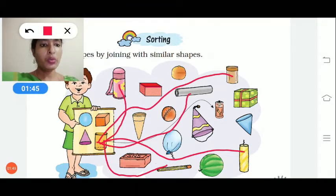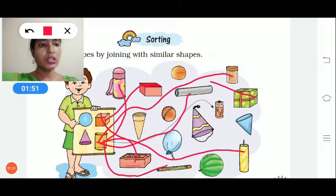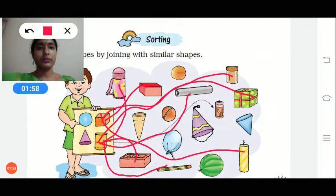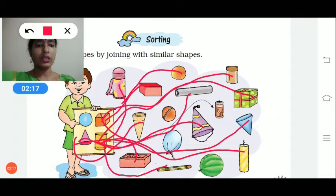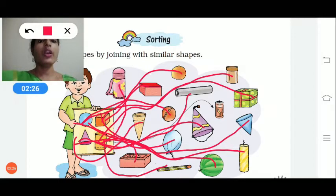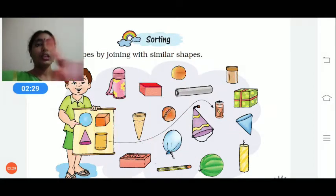Now we will go to the cube shape — this box, these bricks, or this box. Next, let's see which ones look like a cone: the ice cream cone, this birthday cap, and this traffic cone. For the spherical or ball shape: this ball, this orange, this balloon, and this watermelon. We have matched them all.